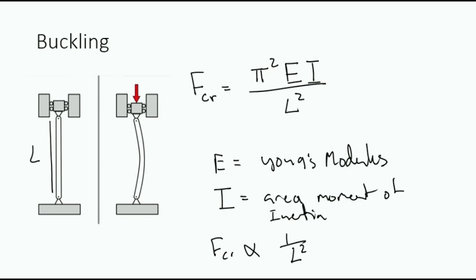What we see from this equation is that F-critical is proportional to 1 over L². Therefore, if the length of the member were to double, the load required to buckle would decrease by four times.